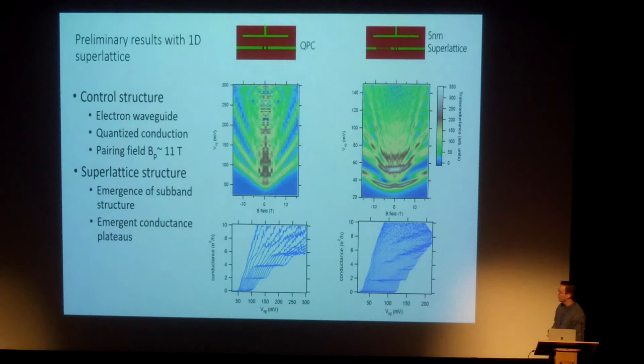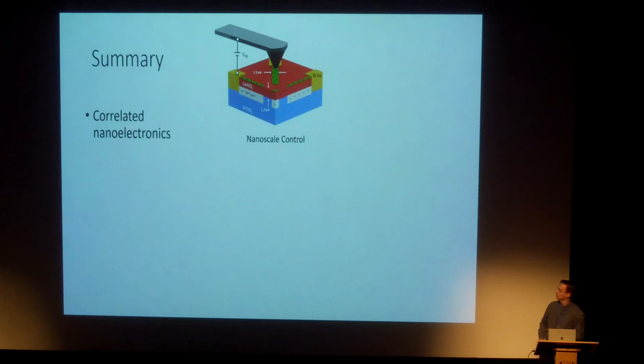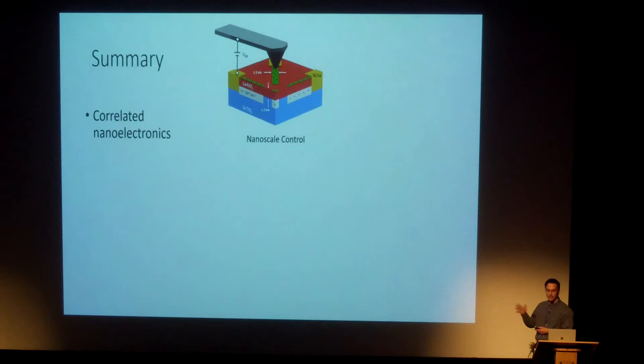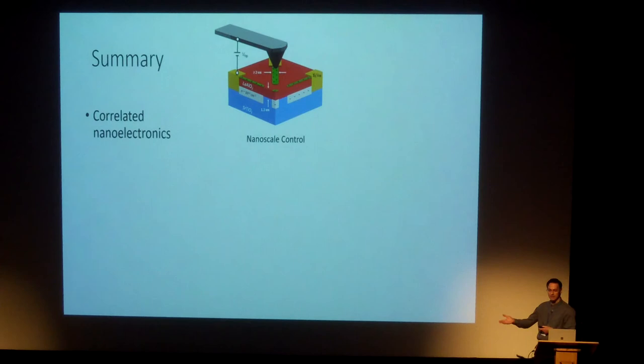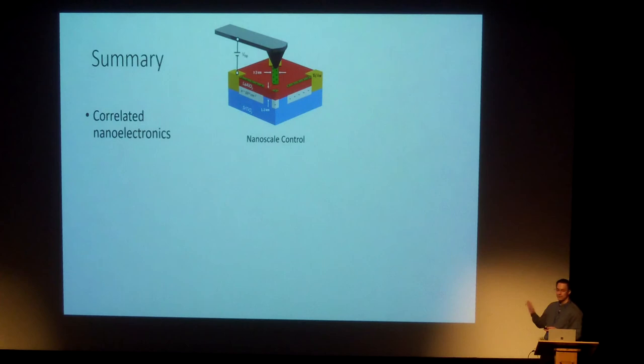Q: What is the stability of these structures? A: We write the structures in ambient conditions, controlling the humidity, which plays an important role in placing positive charges. If we leave the sample in air, it will decay on a scale of a few hours — the natural state is insulating. But if you put the sample in vacuum, it persists indefinitely. Most experiments involve writing the structure and then walking — not running — to the cryostat or vacuum system, being careful also about light, using red light.